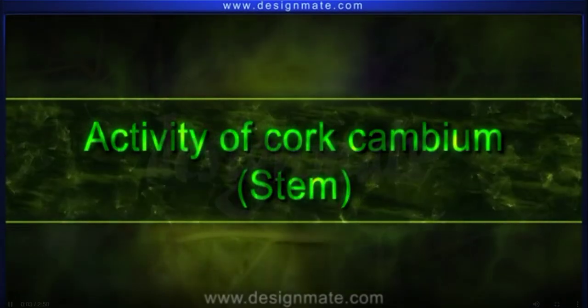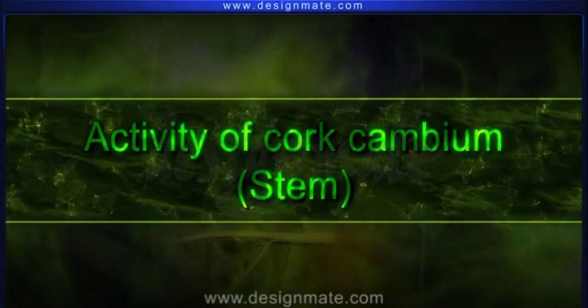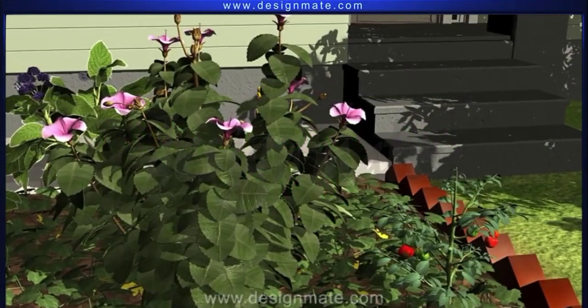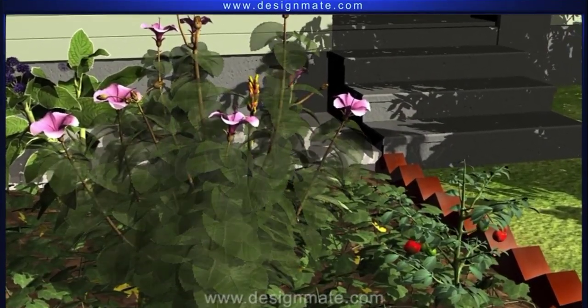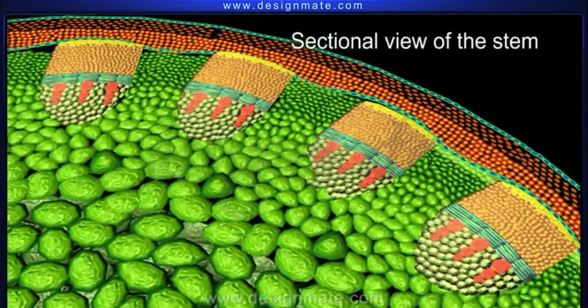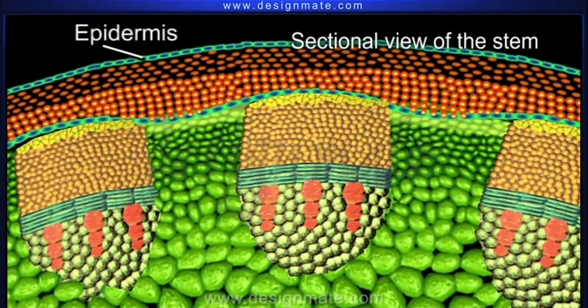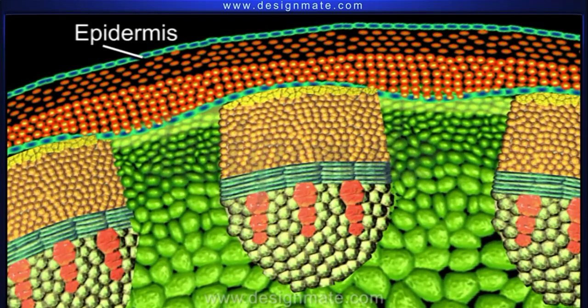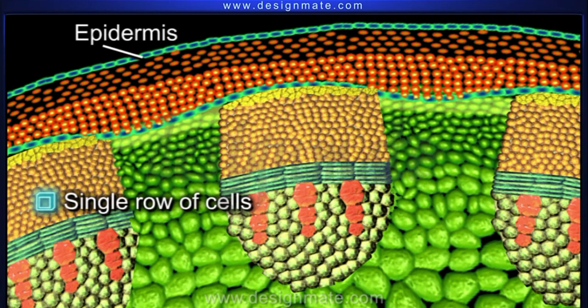Activity of cork cambium stem. Let us focus our attention on the dicot plant. A sectional view of the stem reveals that epidermis, which consists of a single row of cells, forms the outermost layer.